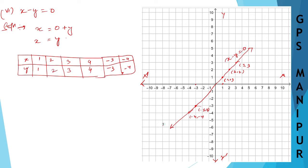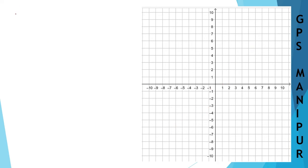This line is called AB. That's all for this graph. Now let us do the next question, which is row number 7: x plus 3y equal to 0.